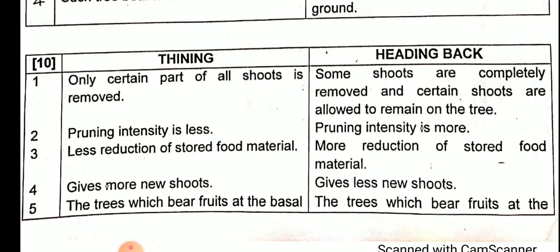Third point: in thinning, there is less reduction of stored food material because only some parts are cut. In heading back, there is more reduction of stored food material because branches are completely cut.